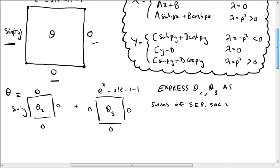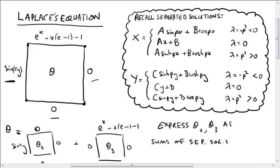The goal is to express theta 2 and theta 3 as sums of separated solutions. Let me remind you what the separated solutions are. They're of the form X(x)·Y(y), where X is either A·sinh(px) + B·cosh(px) or C·x + D or A·sin(px) + B·cos(px), depending on the sign of the constant lambda. Similarly, Y has three forms depending on whether lambda is negative, zero, or positive.